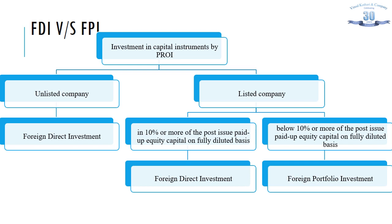In case of an unlisted company, any investment — even 1% or 2% — in equity shares, CCPs, CCDs, or share warrants by a person resident outside India is regarded as FDI. For a listed company, you must first determine what percentage the investment represents of the fully diluted equity capital, meaning all possible conversions of instruments or securities into equity must be accounted for. If 10% or more, it is FDI; if below 10%, it is FPI.